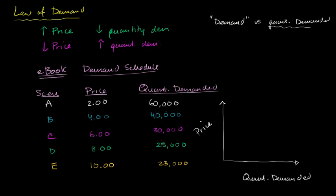So we'll put price in the vertical axis, and we'll put quantity demanded in the horizontal axis. And our quantity demanded goes all the way up to 60,000. So that's 10, 20, 30, 40, 50, 60. So that's 10, this is in thousands. 20, 30, 40, 50, and 60. And this is in thousands.